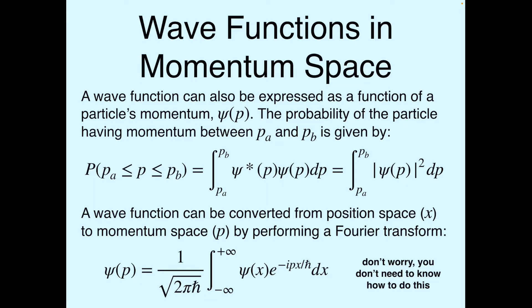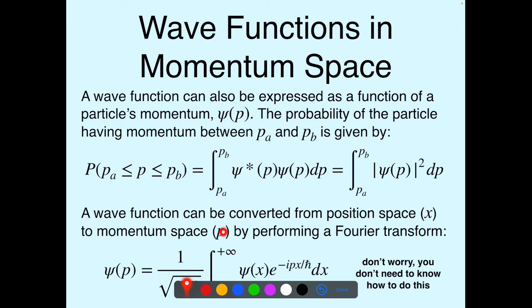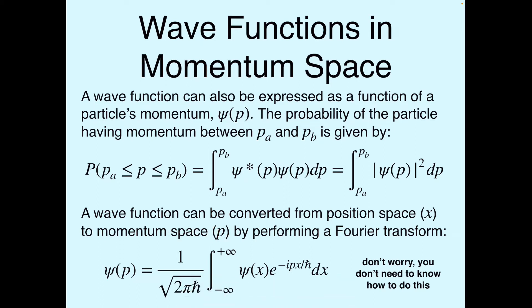We can go from psi of x to psi of p and vice versa using something called a Fourier transform. We won't actually use this in this class — it's a bit beyond physics 47 — but just for reference: psi of p equals 1 over the square root of (2 pi h-bar), times the integral from minus infinity to infinity of psi(x) times e to the minus ipx over h-bar dx. Performing that integral converts from position space to momentum space.